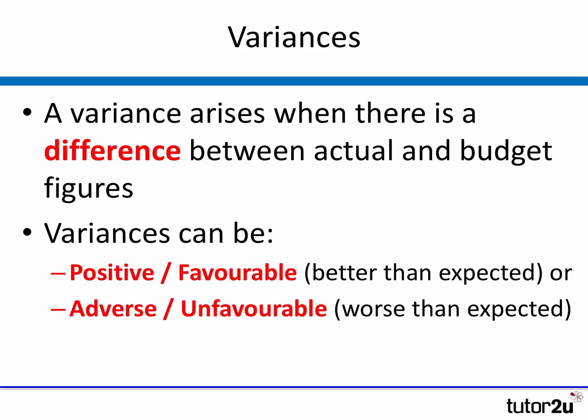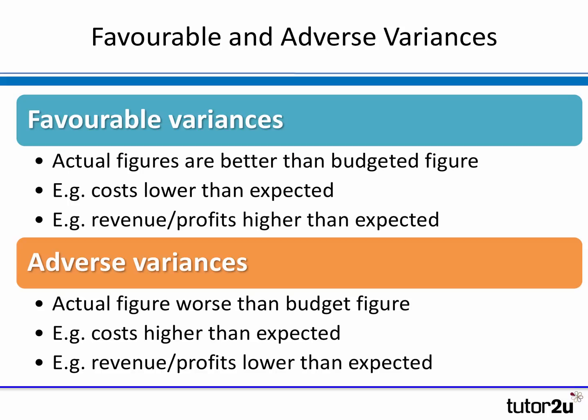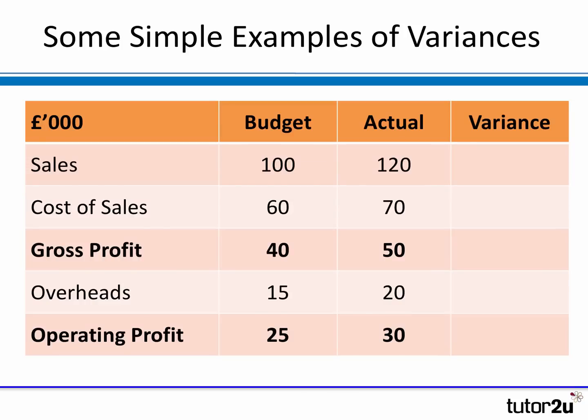For example, costs turning out to be higher than the budget assumed. Favorable variances are where actual figures turn out to be better than the budget — the two key ones being where costs are lower than expected or where actual revenue or profits are higher than expected. Adverse variances are the flip side: actuals are worse than budget — for example, a cost being higher than expected or a cost that wasn't in the budget at all.